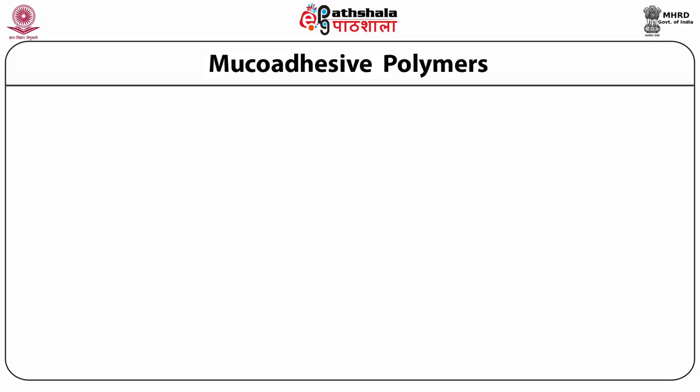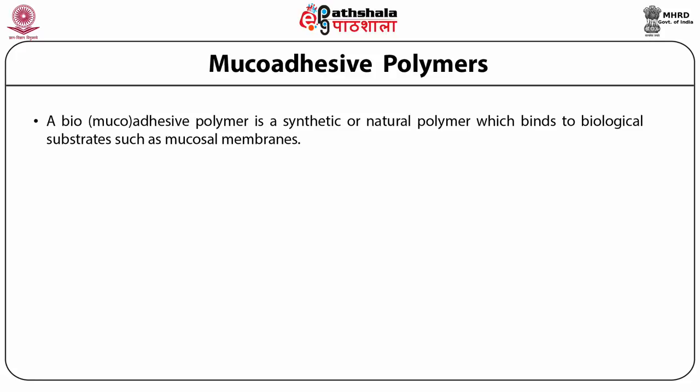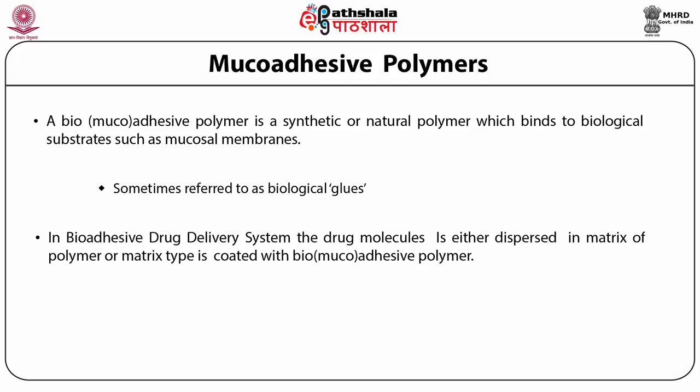After understanding all the nuances of how a mucoadhesive drug delivery system will interact with the mucosal surface, we need to understand the primary component responsible for giving this mucoadhesive property — mucoadhesive polymers. A bio or mucoadhesive polymer is a synthetic or natural polymer which binds to biological substrates such as mucosal membranes, sometimes referred to as biological glues. In a mucoadhesive drug delivery system, the drug molecule is either dispersed in a matrix of polymer (matrix type), or this matrix is coated with a bio or mucoadhesive polymer.